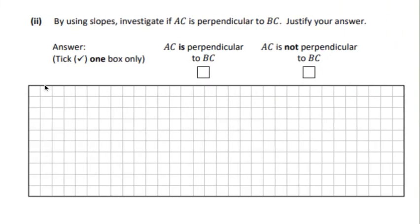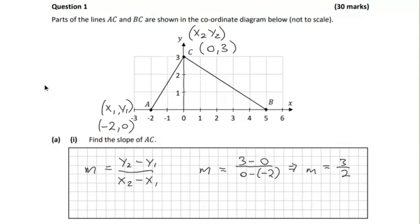Now we need to find whether or not the slope of BC is perpendicular to the original slope AC. So let's get the slope of BC now. The point B is (5, 0) and we can start again with our formula.